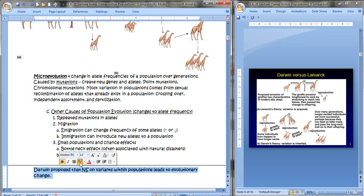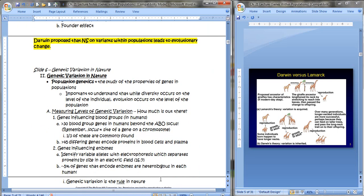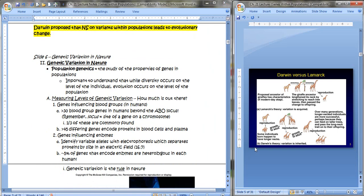So kind of the take-home of this section is that Darwin proposed that natural selection on variants within a population will lead to evolutionary change. So let's look at genetic variation in nature.